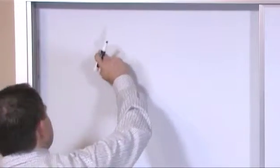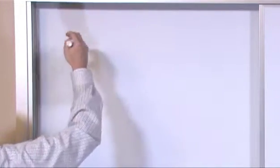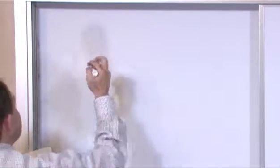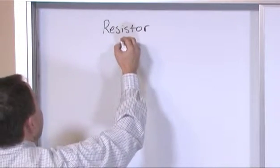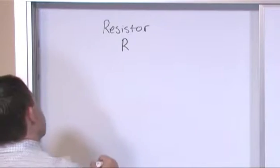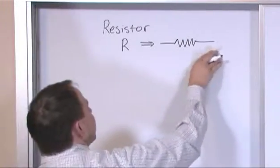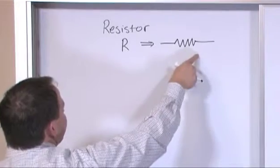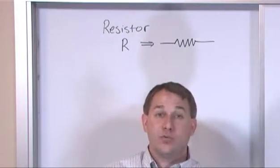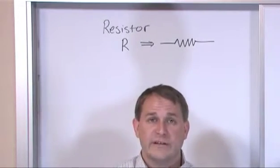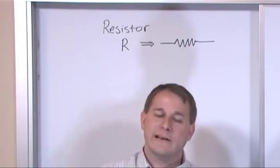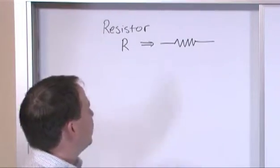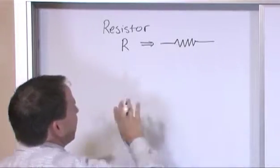An electric circuit is when you have electricity running around in a loop through a wire, and there are components in the circuit. One of the most important basic components everyone learns about at the beginning is the resistor. We typically use the letter R to designate a resistor. The electrical circuit symbol for a resistor looks like a scrunched-up wire, which is sort of trying to tell you that it's presenting an obstacle to current — that's kind of why it's all bunched up. The resistor is not actually constructed with up and down wires; this is just the electrical symbol for it.